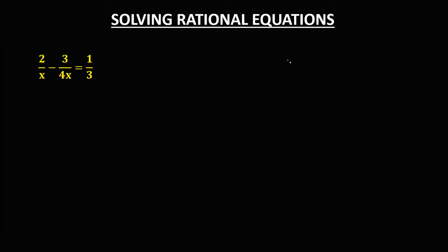For this next given equation, we first need to find the least common denominator. The numerical denominators are 4 and 3. We need the smallest number divisible by both 4 and 3. If we try 6, it's not divisible by 4. If we try 8, it's not divisible by 3. If we try 12, it's divisible by both 4 and 3, so the LCD for the numbers is 12. But since we also have the variable x, the LCD is 12x.